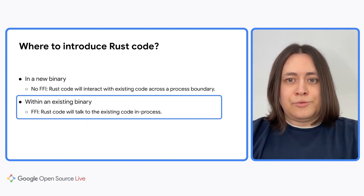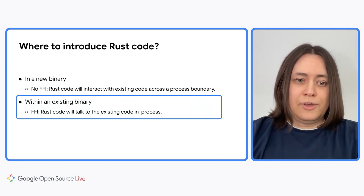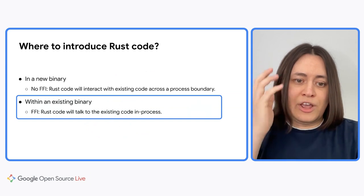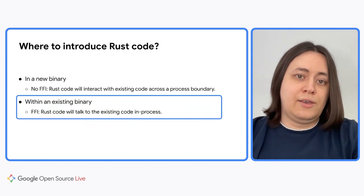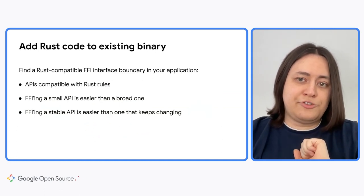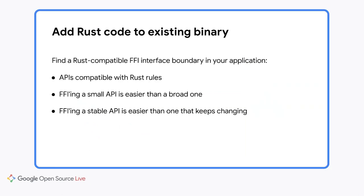Now let's talk about adding Rust code to an existing binary. In this case, Rust code will talk to your existing code through an in-process foreign function interface, or FFI for short. Let's say your existing application is written mostly in C++. You should find an interface boundary in your application where it will be convenient for C++ to interact with Rust. The API on this cross-language boundary should be compatible with Rust aliasing and borrow checking rules. Another factor to consider is that bridging small and stable APIs to Rust is easier and cheaper to maintain compared to bridging broad and constantly changing APIs.